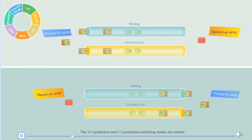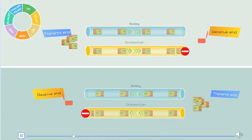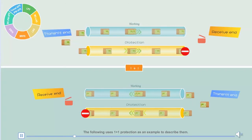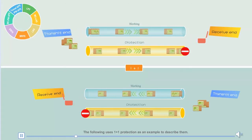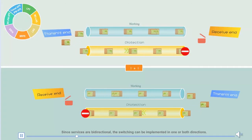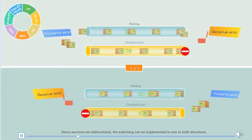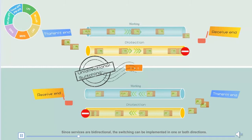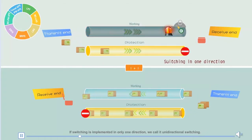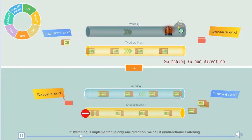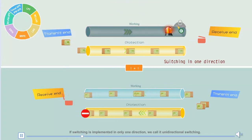The 1-plus-1 protection and 1-to-1 protection switching modes are similar. The following uses 1-plus-1 protection as an example to describe them. Since services are bi-directional, the switching can be implemented in one or both directions. If switching is implemented in only one direction, we call it unidirectional switching.